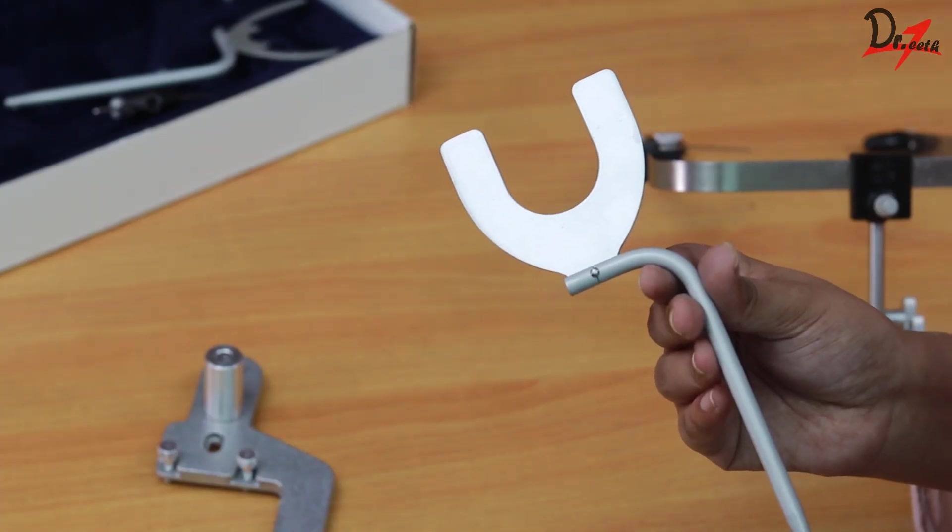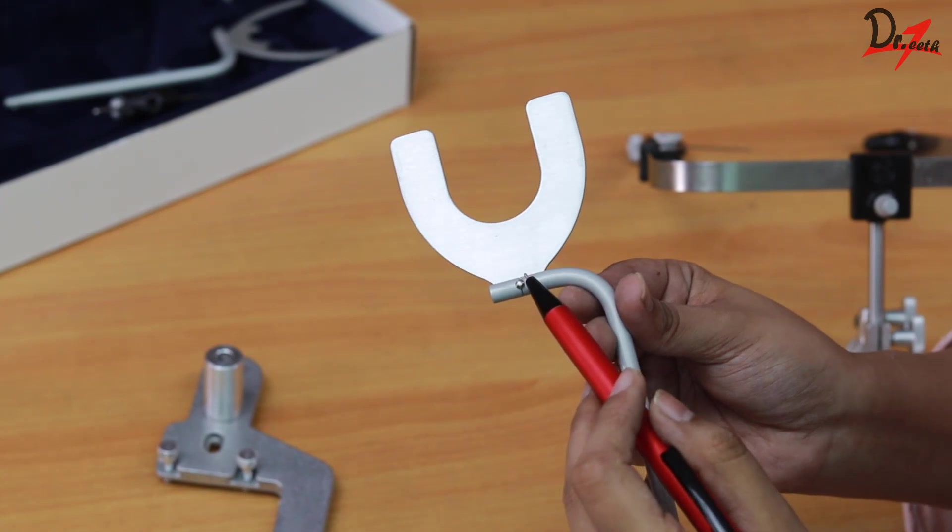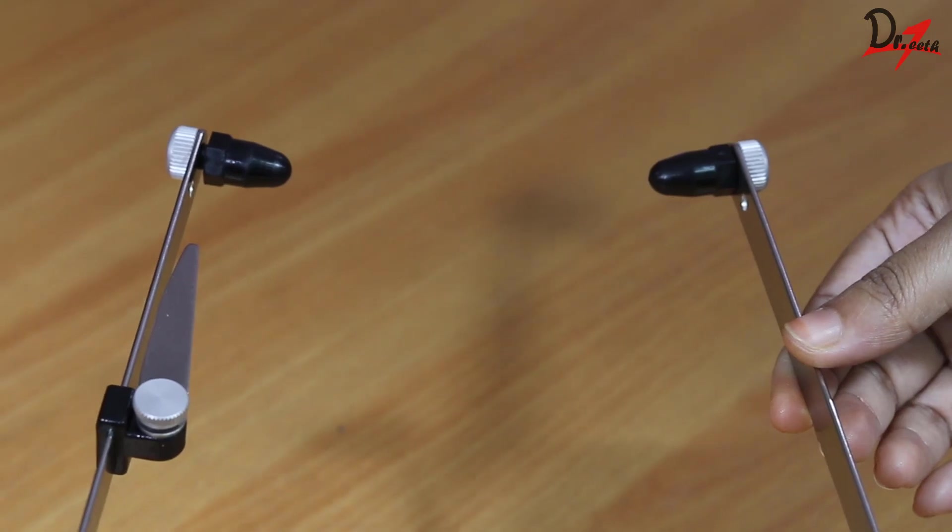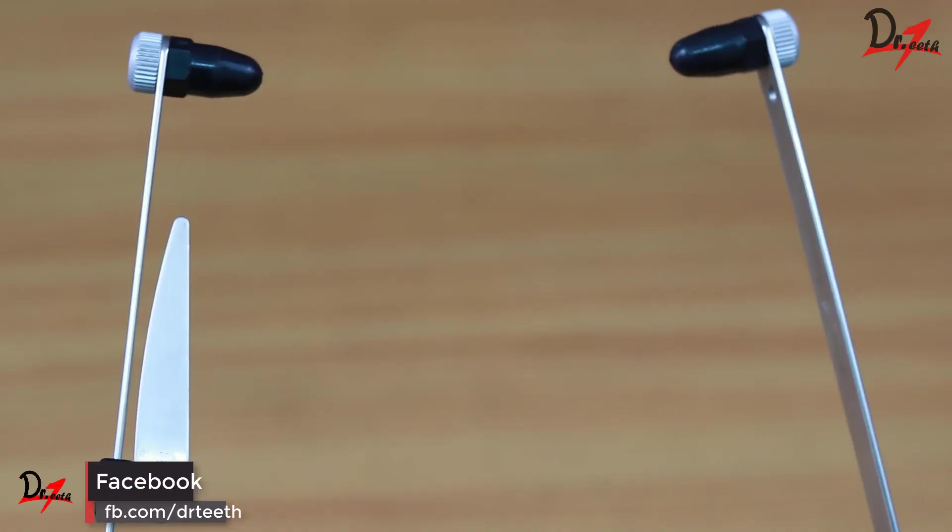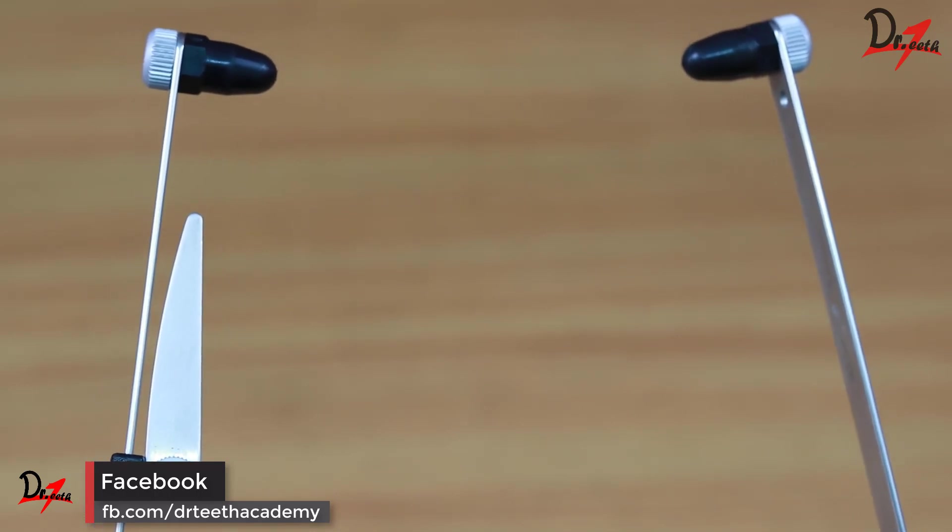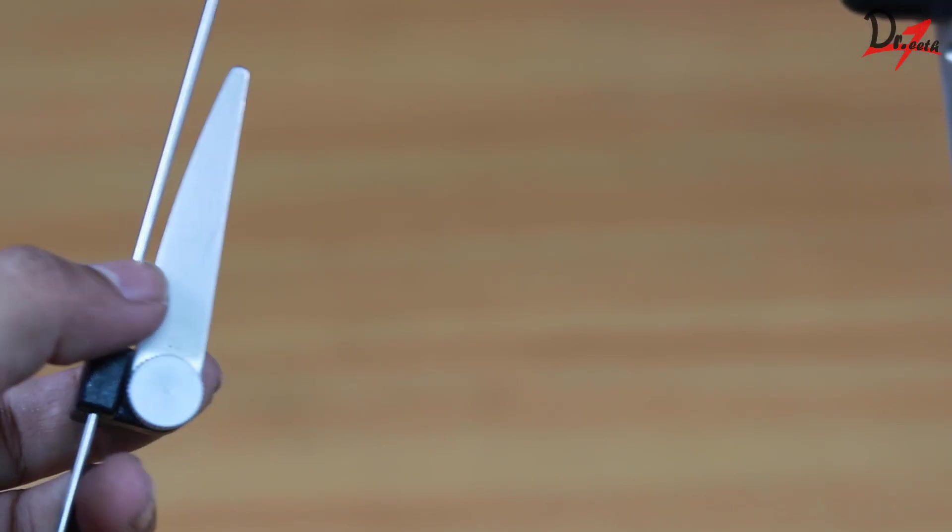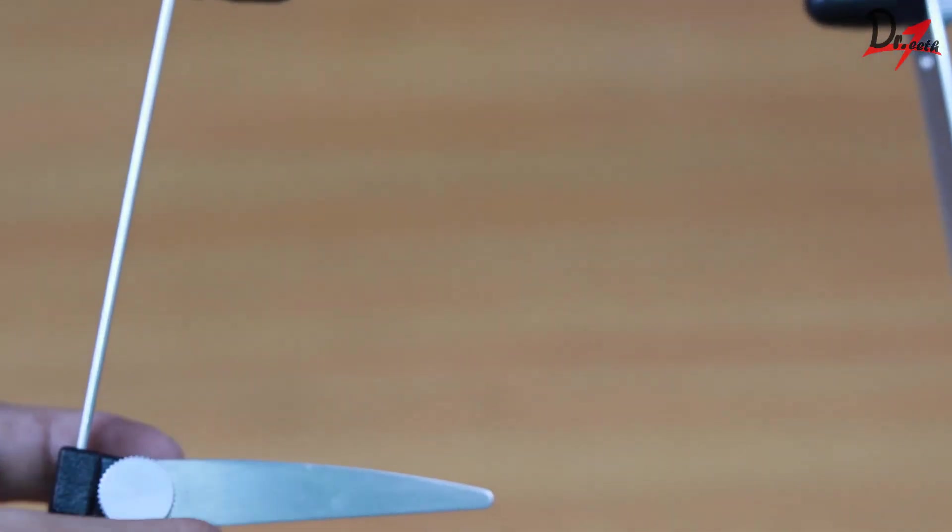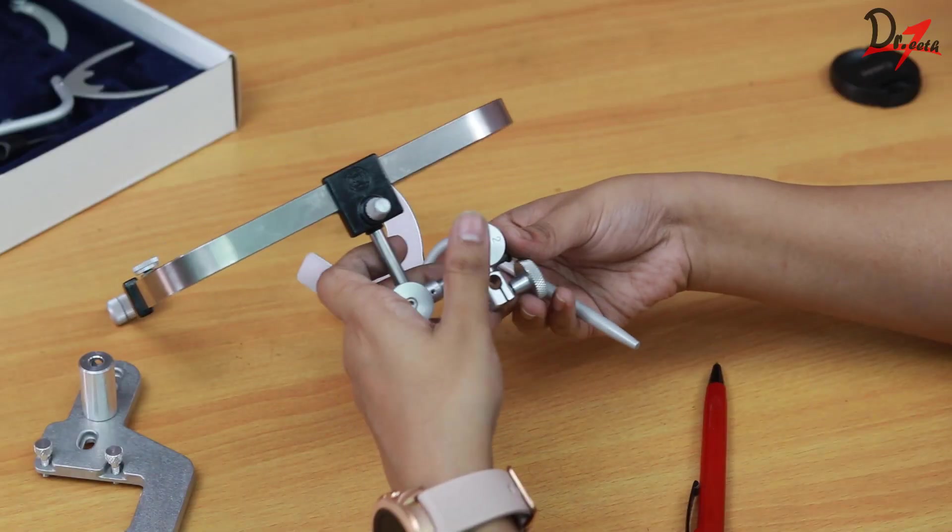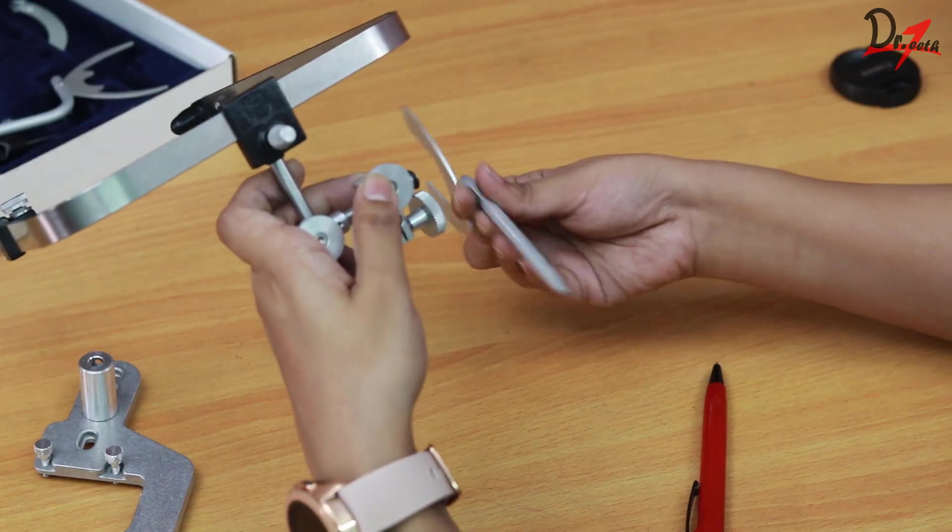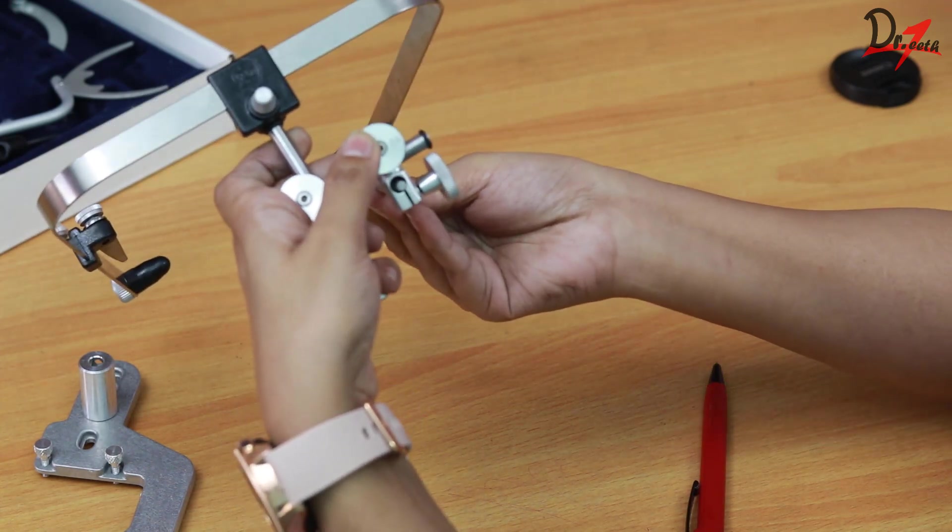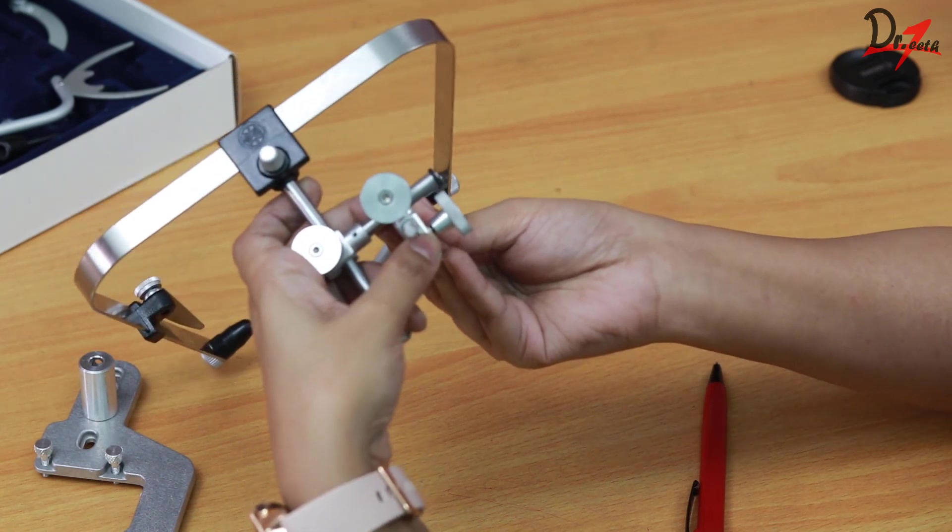Then you have to take the bite fork and put the registration material—like we can use two sheets of modeling wax, heat it up and adapt it properly. Then put it inside the patient's mouth. Then take this U-shaped frame and locking device assembly, and with the patient's help, insert the earpieces into the external auditory meatus of the patient. Also palpate the infraorbital notch and align the orbital pointer according to that. Then finally we have this hole here in the locking device which is used to attach the bite fork.